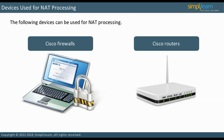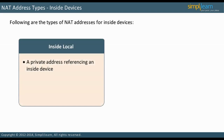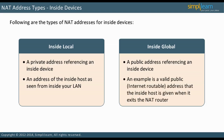There are four different types of addresses in NAT: inside local, inside global, outside local, and outside global. The terms local or global refer to the current location of the packet, while the terms inside or outside refer to the location of the device. An inside local address is a private address referencing an inside device — it is the address of the inside host as seen from inside your LAN, most likely an RFC 1918 address. An inside global address is a public address referencing an inside device — it is the address of the inside host as seen from the internet, a valid public internet-routable address that the inside host is given when it exits the NAT router.